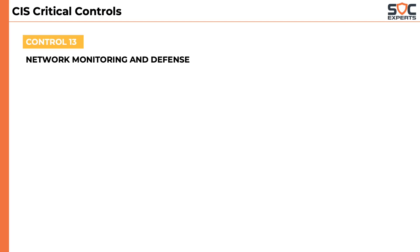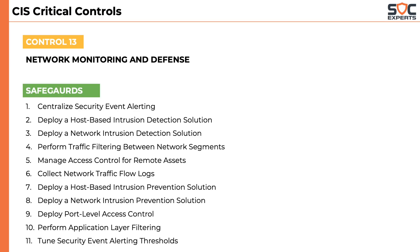The thirteenth control defines network monitoring and defense. It has 11 safeguards that highlight use of HIPS, NIPS, collecting traffic logs and flows, and performing application-level filtering.